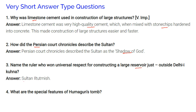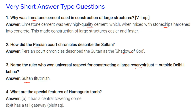The question about Sultan Iltutmish is noted. Regarding the special features of Humayun's tomb: it has a central towering dome and a tall gateway called the pishtak.